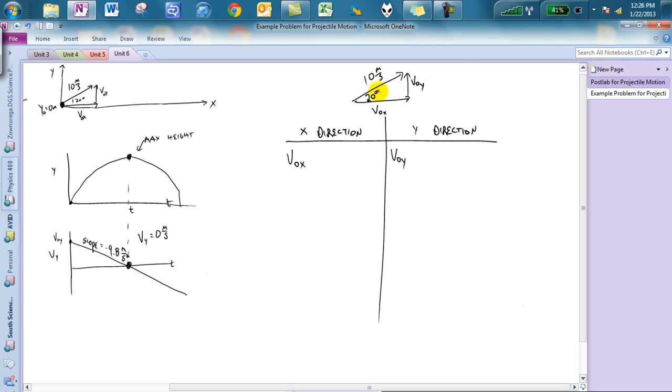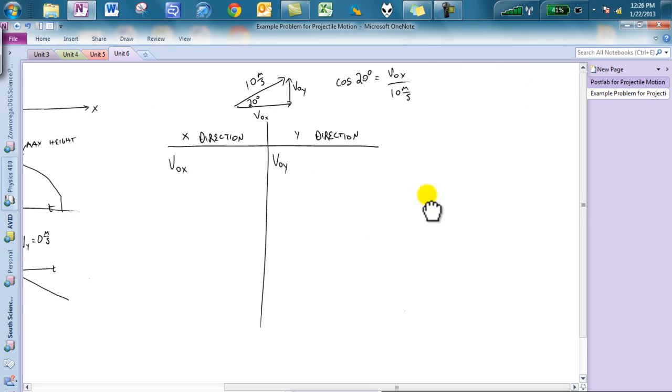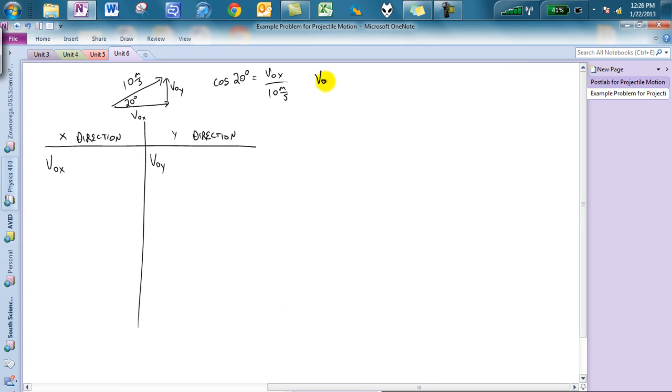So I can say the cosine of 20 degrees is equal to v0x over 10 meters per second. While solving for v0x, all that you have to do is to do 10 times the cosine of 20 degrees. And when you do that, you get 9.39 meters per second.